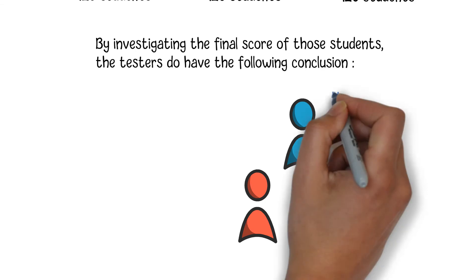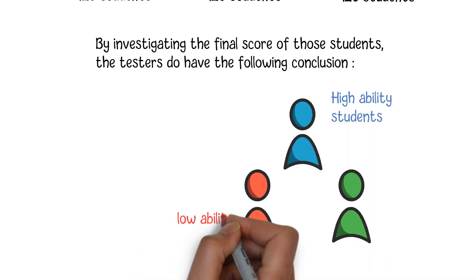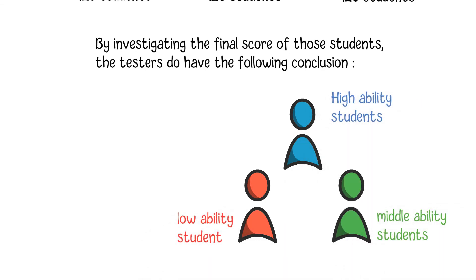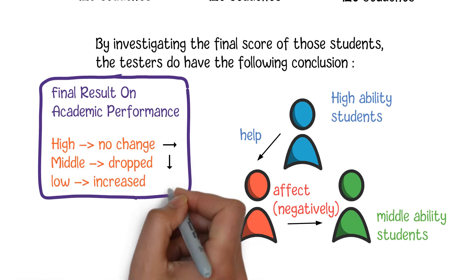High-ability students themselves are usually not easily influenced by others, but they can significantly improve the academic scores of low-ability students. Also, low-ability students will have a negative impact on middle-ability students in academic performance.